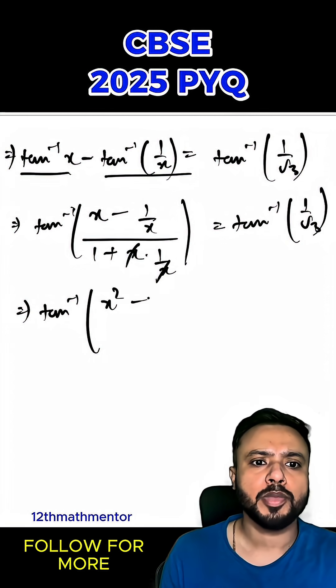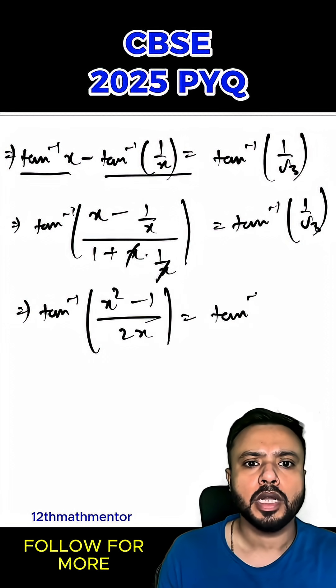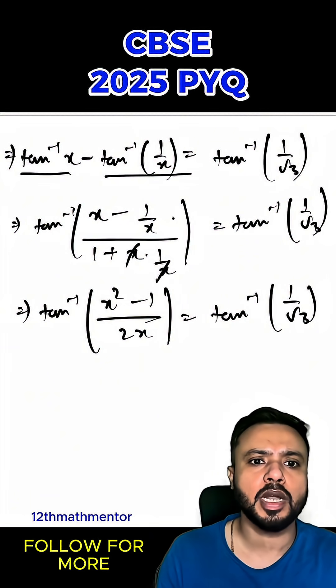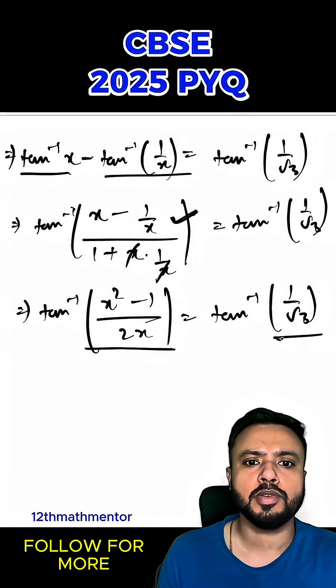So I can write it as tan⁻¹((x² - 1)/(2x)) = tan⁻¹(1/√3). I've taken the LCM in the numerator and simplified it.